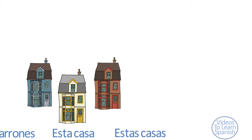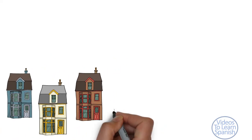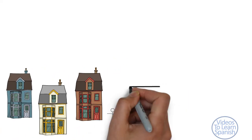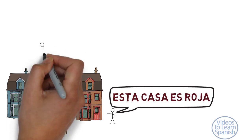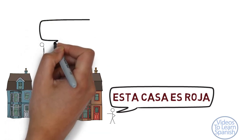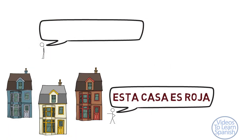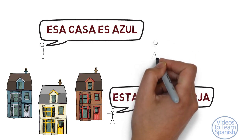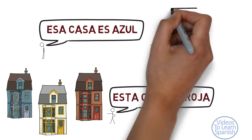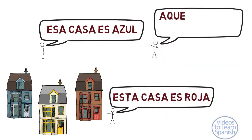In these sentences, both the demonstrative and the adjective must agree in gender and number with the noun they go with. Casa, which is a feminine and singular noun: esta casa es roja, esa casa es azul, aquella casa es blanca.